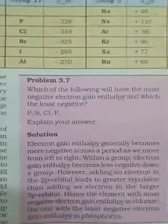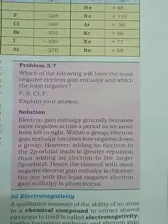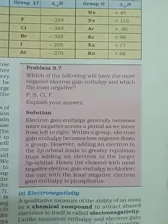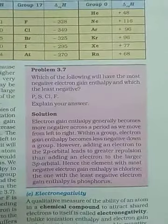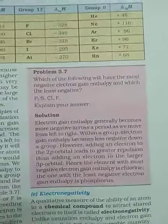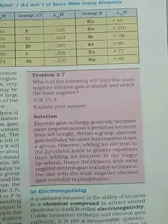Electron gaining means electron affinity, and these groups have high losing or gaining capacity. Now I will show you problem 3.7: which of the following will have the most negative electron gain enthalpy and which is the least negative? The elements given are phosphorus, sulfur, chlorine, and fluorine. First, note the atomic numbers: fluorine is 9, chlorine is 17.